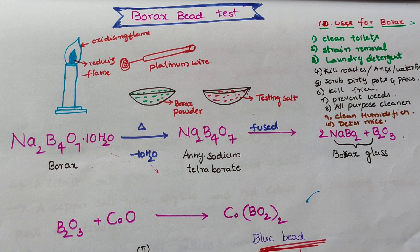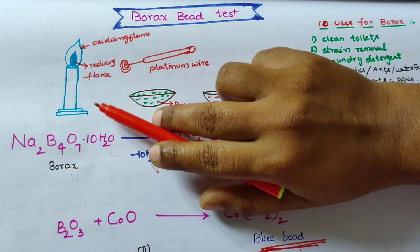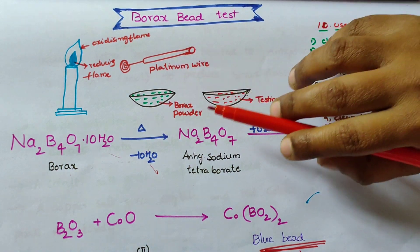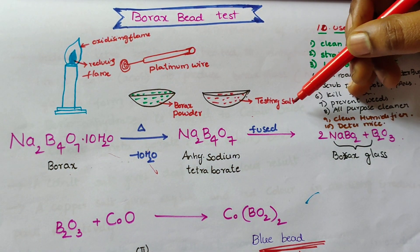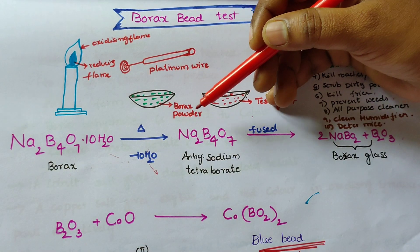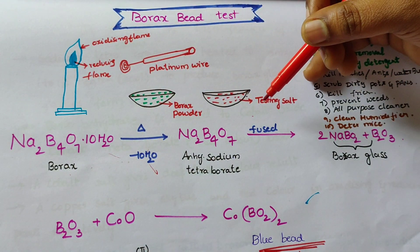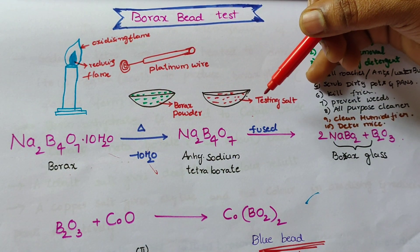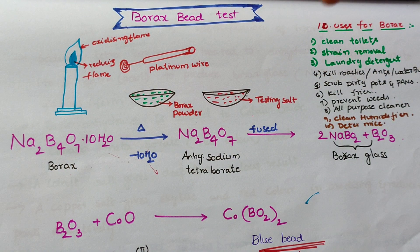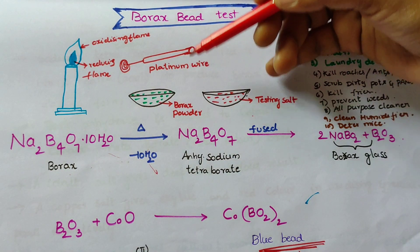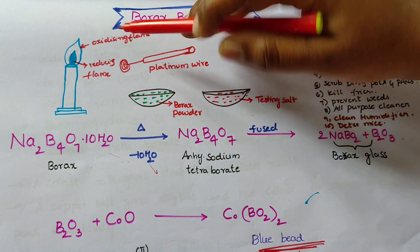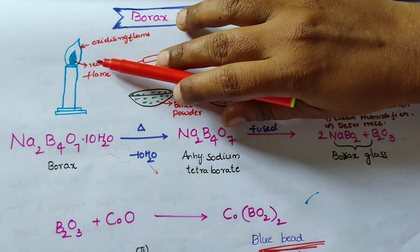That means this is a Bunsen burner flame, this is a platinum wire, borax powder and testing salt. Some amount of borax powder is taken, added to a testing salt, and a platinum wire is exposed to the Bunsen burner flame.